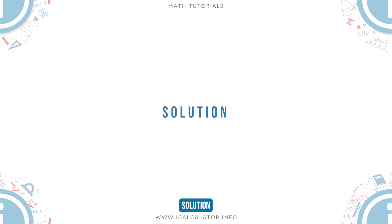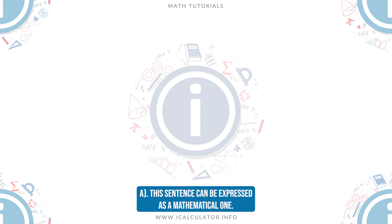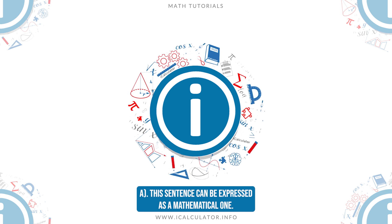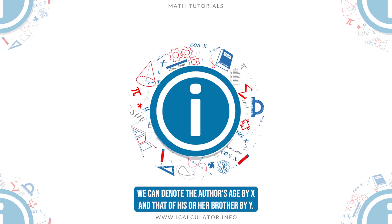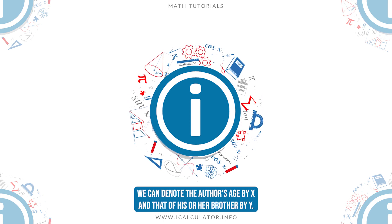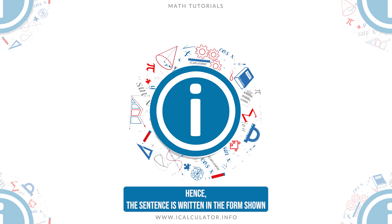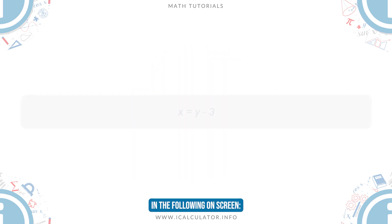Solution: A: This sentence can be expressed as a mathematical one. We can denote the author's age by X and that of his or her brother by Y. Hence, the sentence is written in the form shown on screen.